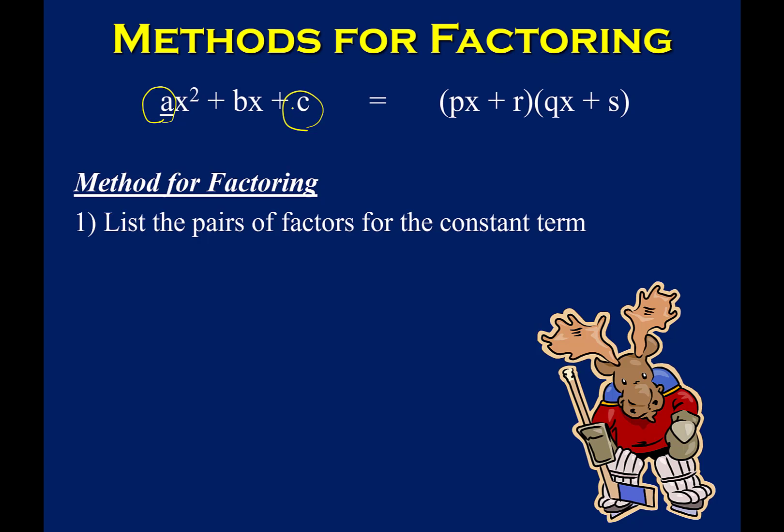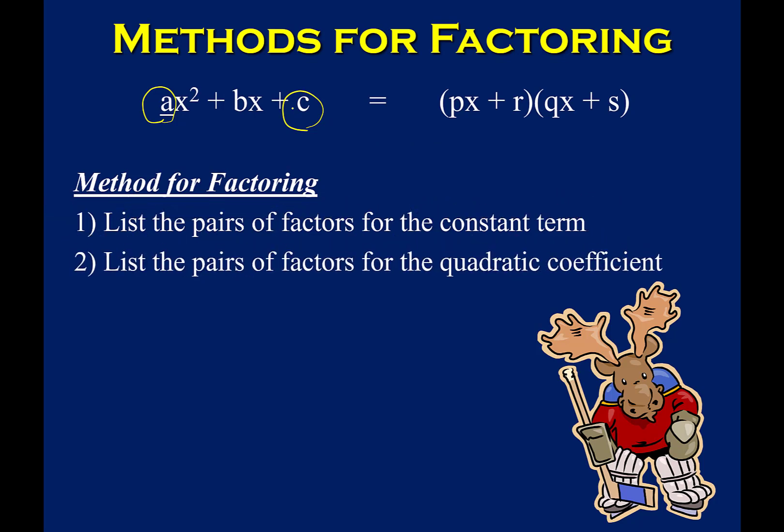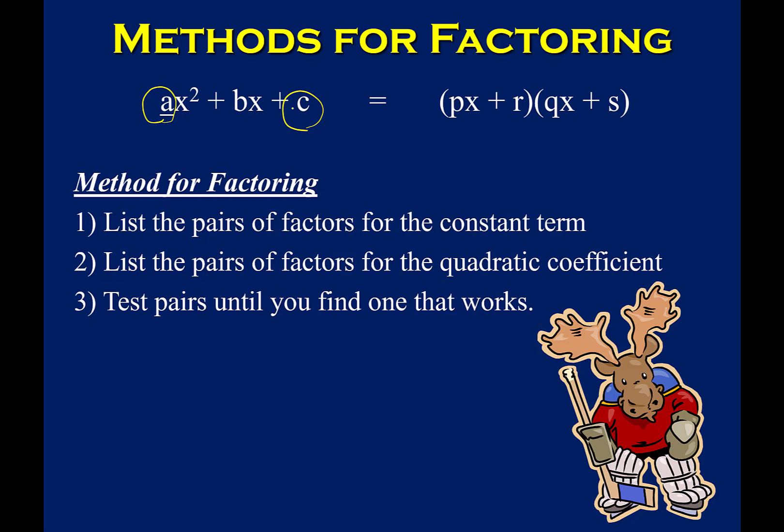There are different approaches to solving these types of problems. The way that I teach it is more of a mental math, in-your-head process, where other teachers may teach more systematic ways using boxes or other approaches. Use whatever method works best for you. We're going to list the factor pairs for the constant and the quadratic coefficient, and then we're trialing and erroring — testing the different pairs to figure out what works.